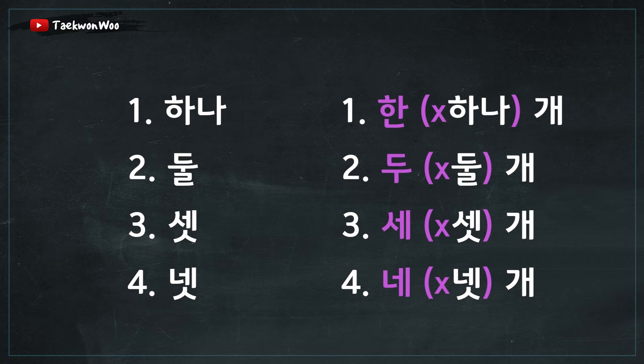In numbers 3 and 4, the final consonant 시옷 has disappeared, so you read 세 개 instead of 셋 개, and 네 개 instead of 넷 개. These changes apply even when you are counting animate objects, such as animals or people.